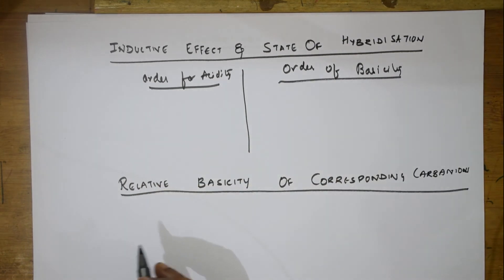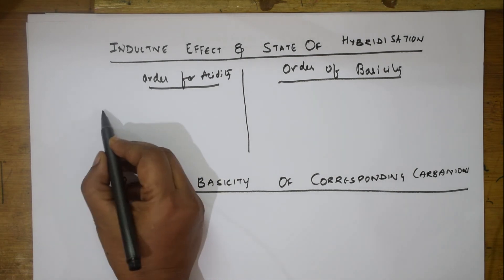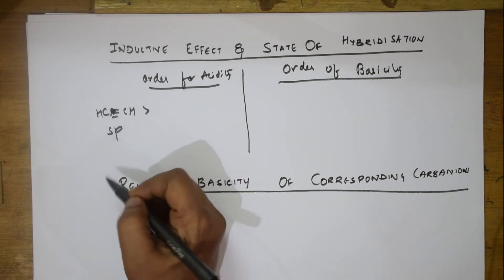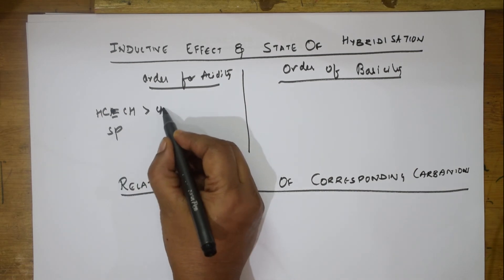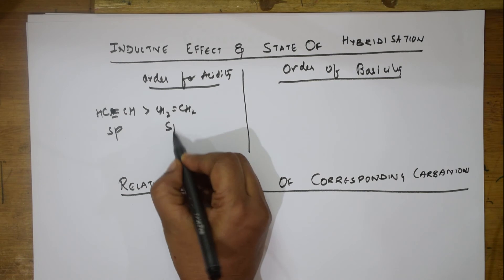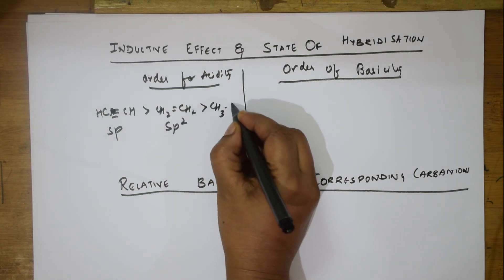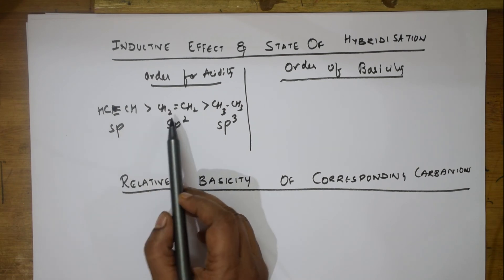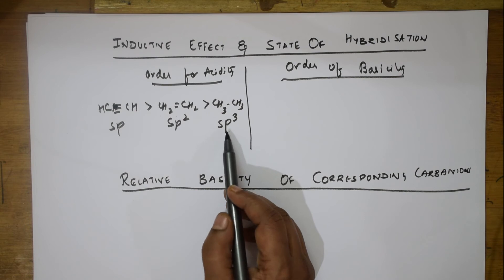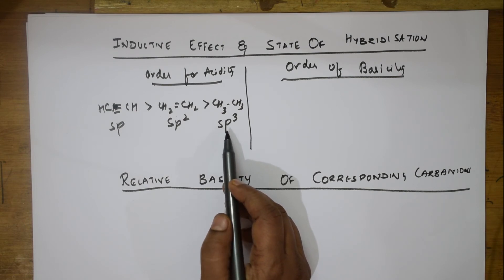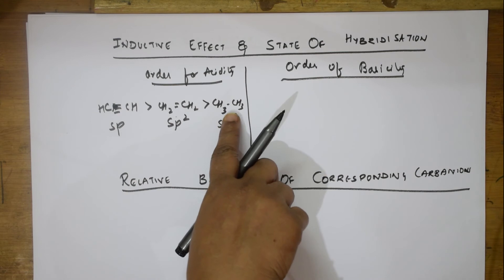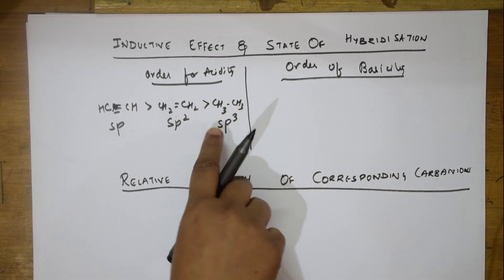For the acidity order of hydrocarbons: sp hybridization (alkynes) is most acidic, followed by sp2 hybridization (alkenes), and sp3 hybridization is least acidic. Now when speaking in terms of the basicity of the corresponding carbanions, the order is the reverse.